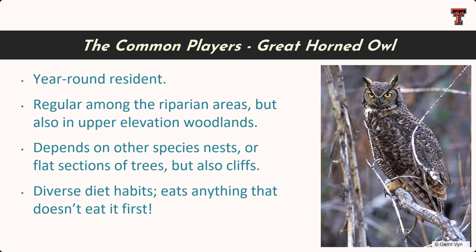The big dog in the mix is the Great Horned Owl — a year-round resident. You find them regularly in the riparian areas. They're so secretive you almost have to flush them out before you can spot them, but they're found pretty much everywhere from the riparian areas all the way up to the highest elevations. They nest on old nests from ravens and other raptors, and on cliff scrapes or abandoned buildings. They eat anything that doesn't eat them first — I've found rattlesnake skulls to porcupine quills in their pellets, and they will eat things up to the size of a skunk or jackrabbits, down to centipedes and grasshoppers.